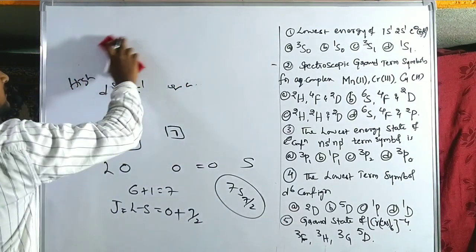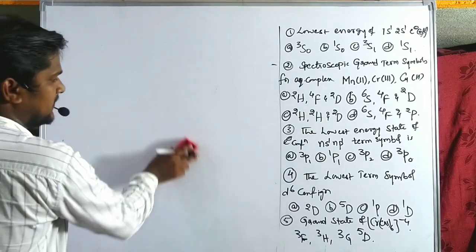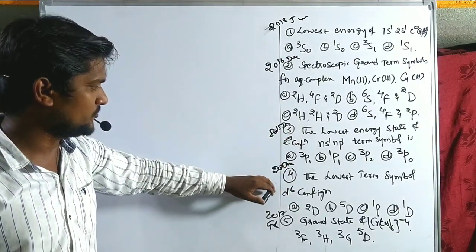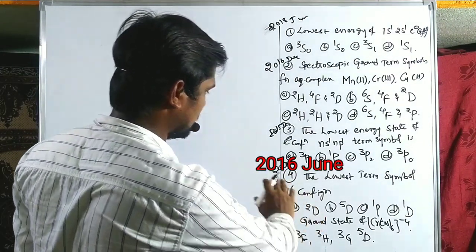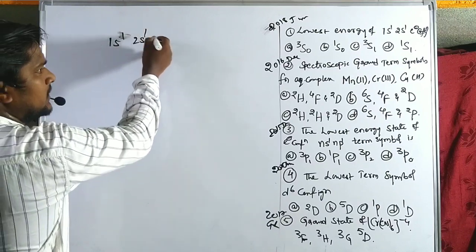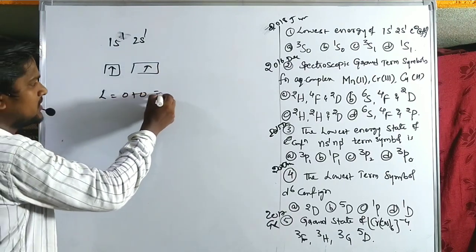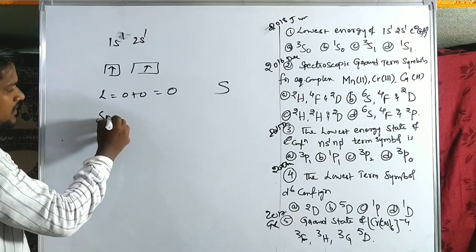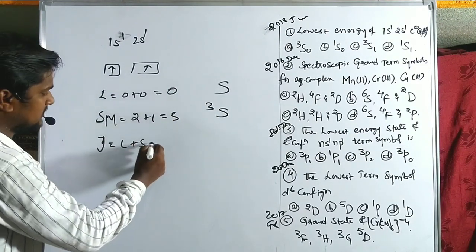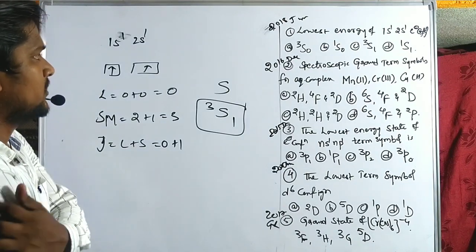Now solving previous year CSIR and GATE problems. Problem 1 (2018): ground term symbol of 1S2, 1S1, 2S1. All S orbitals, so L = 0+0 = 0, term is S. Two unpaired electrons, multiplicity = 2+1 = 3. J = L+S = 0+1 = 1. The ground term symbol is 3S1. Option C is correct.